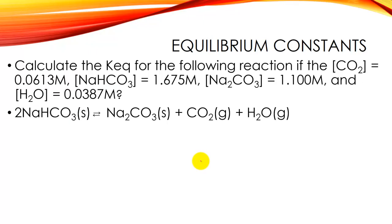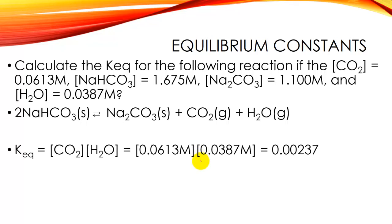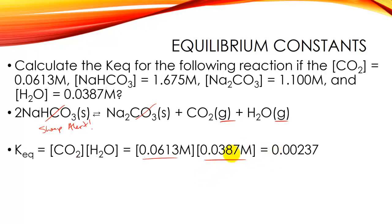Getting a little bit crazy — calculate the KEQ for the following reaction. This is actually heterogeneous equilibria, so I only care about gases or aqueous species in KEQ or KC statements. The two solid products are ignored. Notice they gave you extra information — the concentrations of the solids — that you did not need. Plug in the amount for carbon dioxide and for water, multiply them out, three sig figs times three sig figs, and again no units. Straightforward algebra.